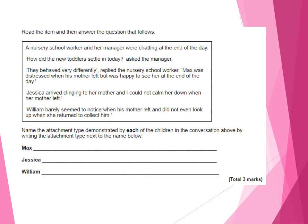Max is securely attached. Jessica is insecure resistant because she was very clingy, not willing to explore, cannot be calmed down, and was very distressed at separation. William is insecure avoidant because he didn't really show any separation or stranger anxiety and didn't need comfort when his mum came to collect him.